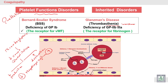Platelet function disorders may be inherited or acquired. Starting with inherited, we took Bernard-Soulier syndrome before. Bernard-Soulier syndrome is a deficiency of the receptor for von Willebrand factor — the glycoprotein 1b receptor — leading to a decrease in platelet adhesion.